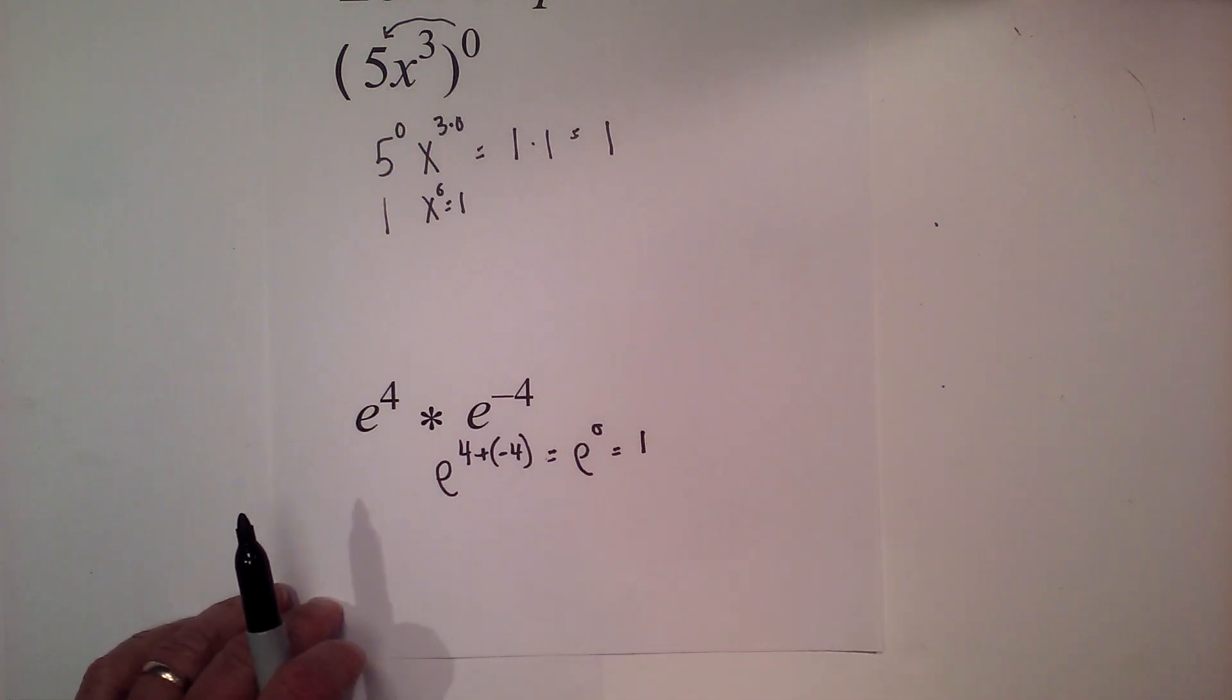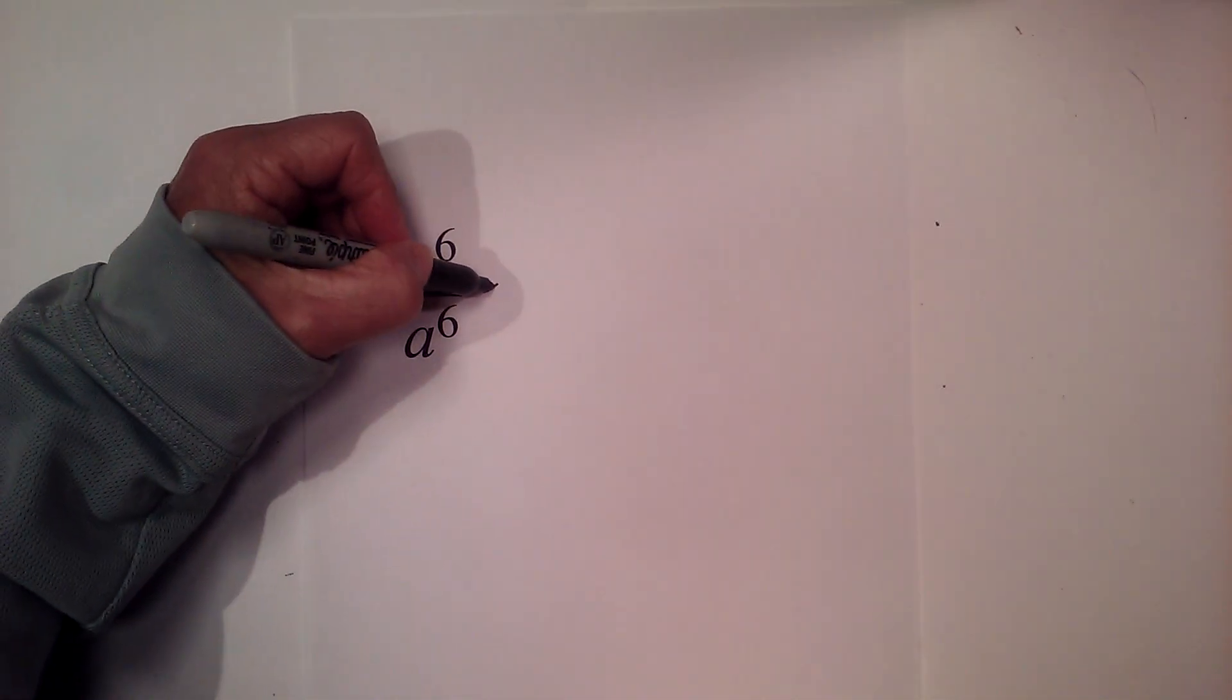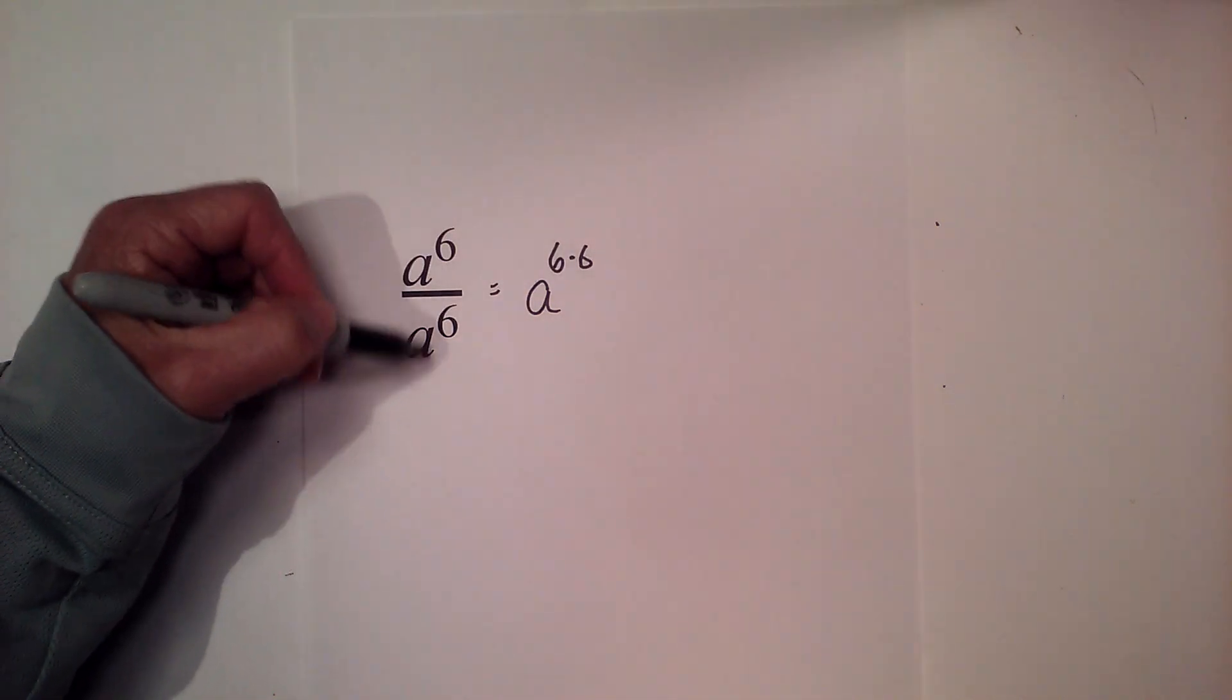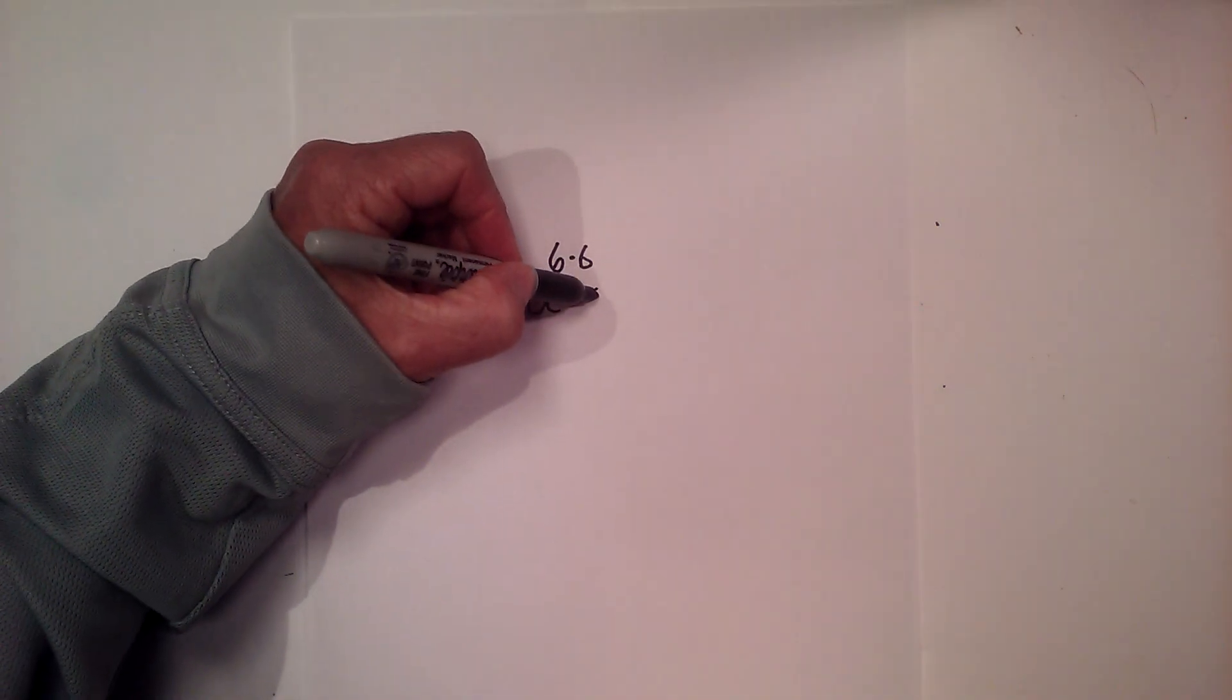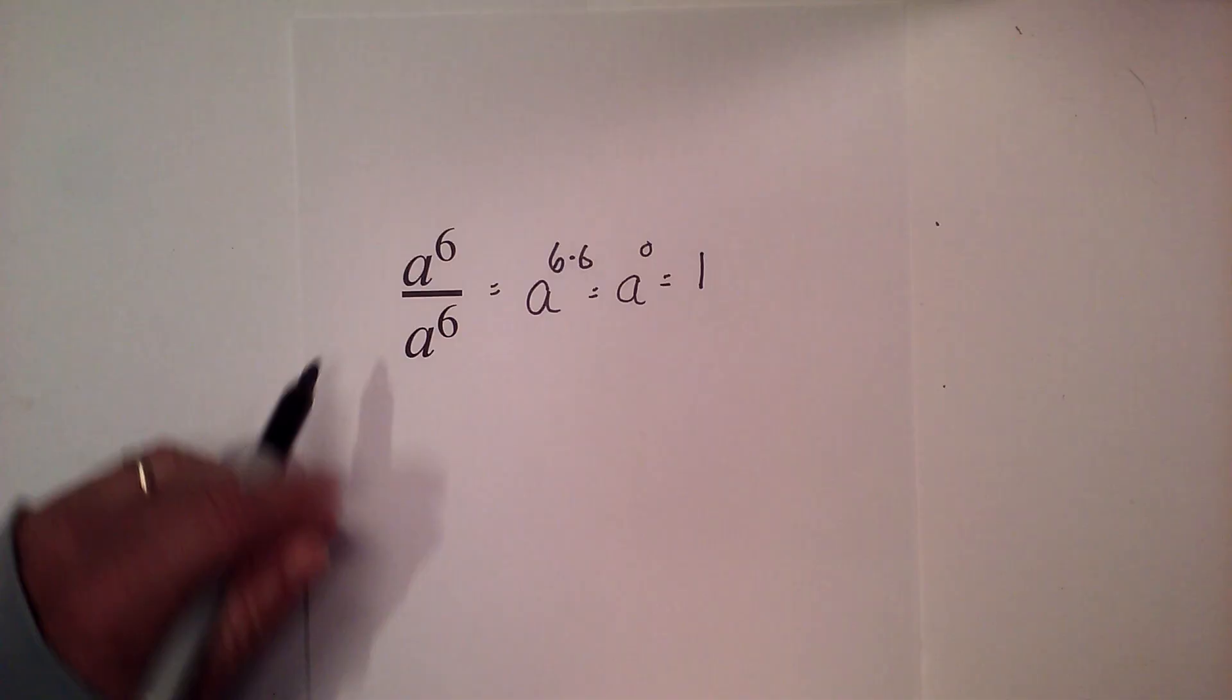Now let's look at another one. We have a to the 6th divided by a to the 6th, and that equals a to the 6 minus 6 because it's division, which is equal to a to the zero power, which is equal to 1.